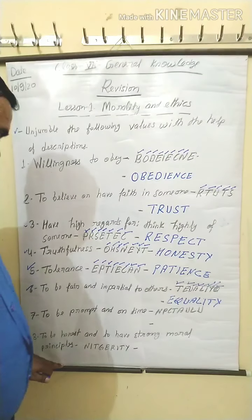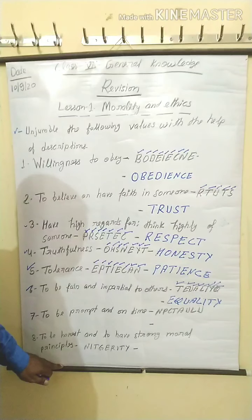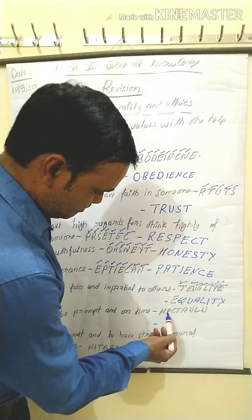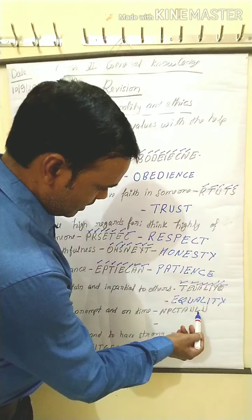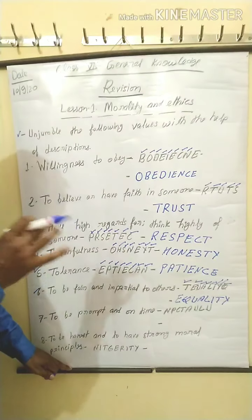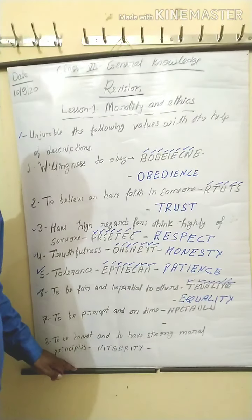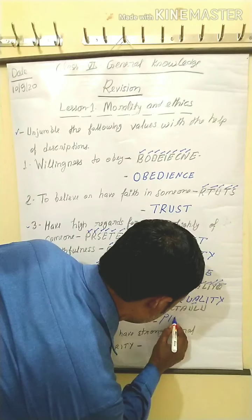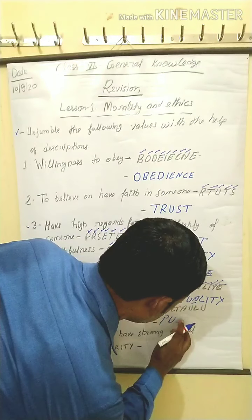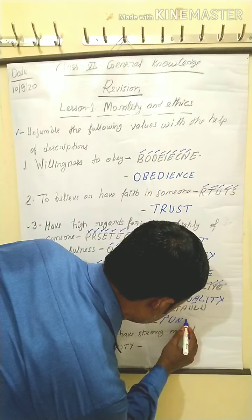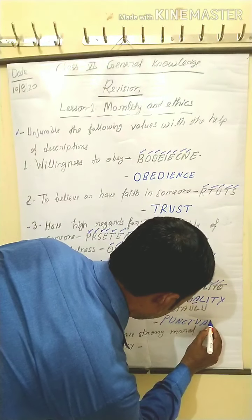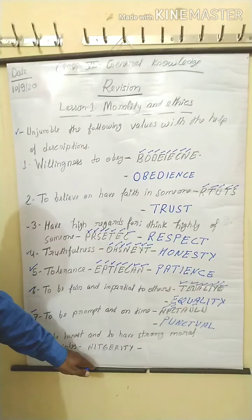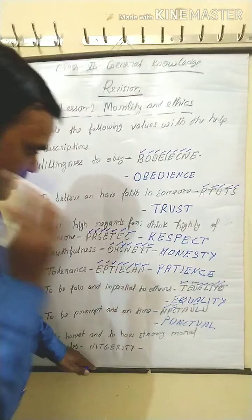Next, number seven: to be prompt and on time. The jumbled letters given are N-P-C-T-A-U-L-T-U. What is the correct word of this jumbled word? The answer is Punctual.